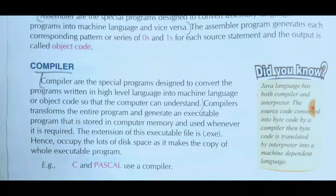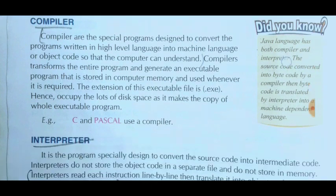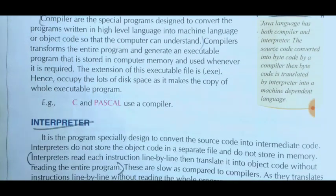A compiler is a special program designed to convert high level programming code to machine language, or object code, so the computer can understand it. Similarly, an interpreter is also a program which converts high level code to machine language that the computer can understand.